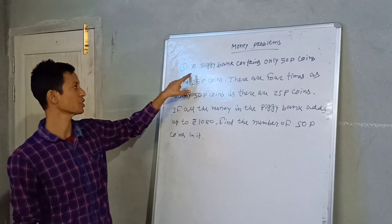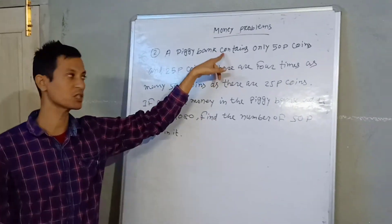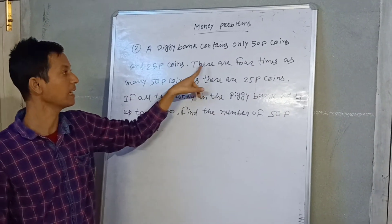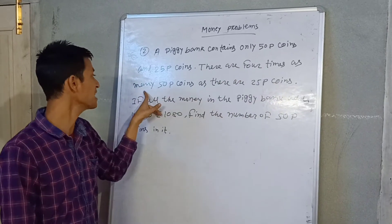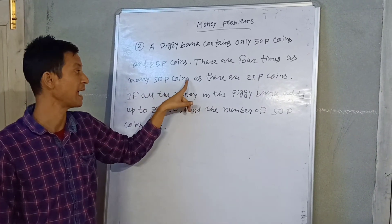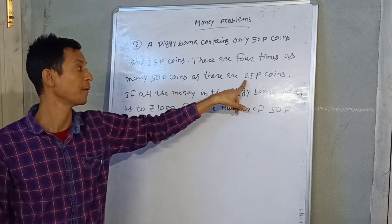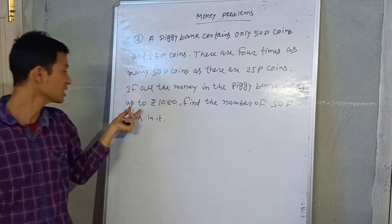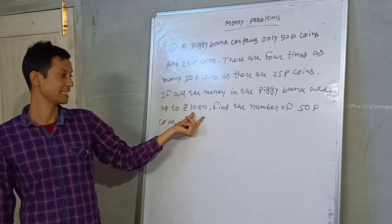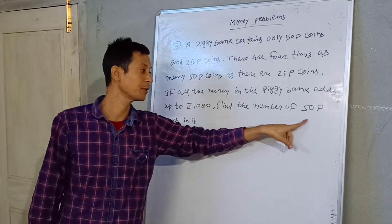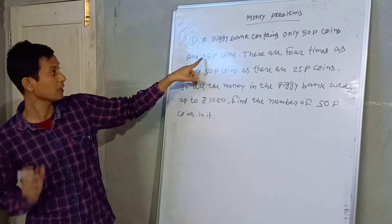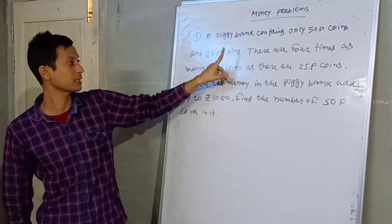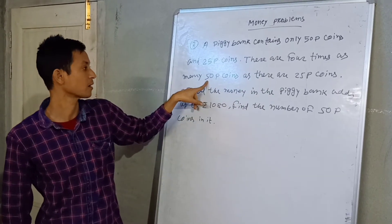Question number two: A piggy bank contains only 50 paisa coins and 25 paisa coins. There are four times as many 50 paisa coins as there are 25 paisa coins. If all the money in the piggy bank adds up to rupees 1080, find the number of 50 paisa coins.